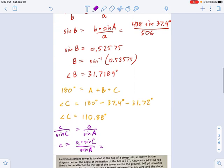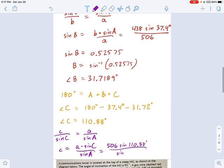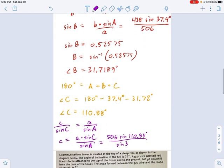Little a is 506. Sine of angle c is sine of 110.88 degrees. And then it's divided by sine of, where's a? I lost a. What is a? 37.4 degrees. So let's just plug this all in. 506 sine of 110.88 divided by sine of 37.4. Pretty big lake. We get little c equals 778 meters. And that is the answer to this problem.